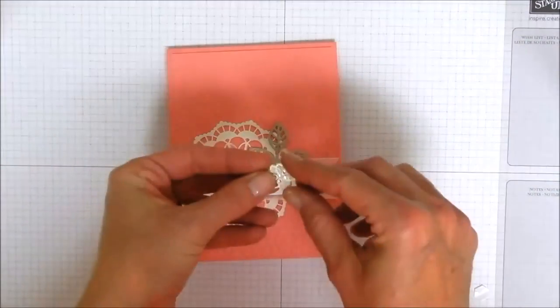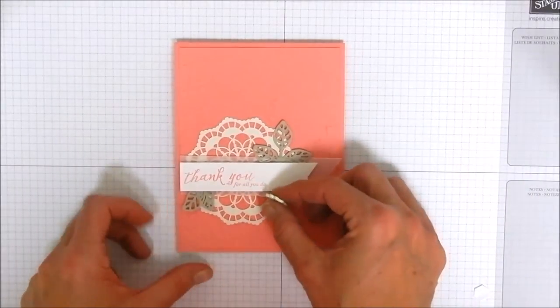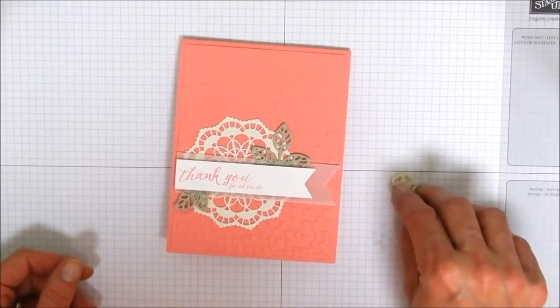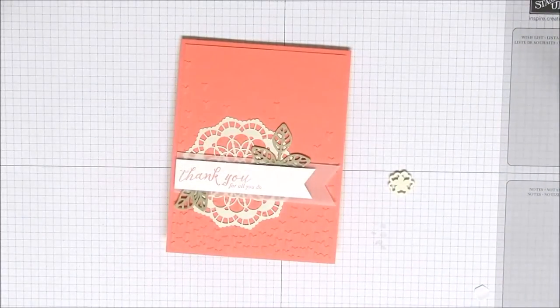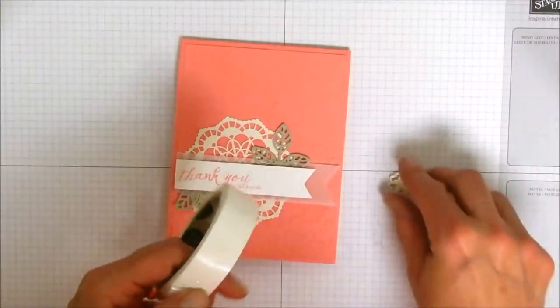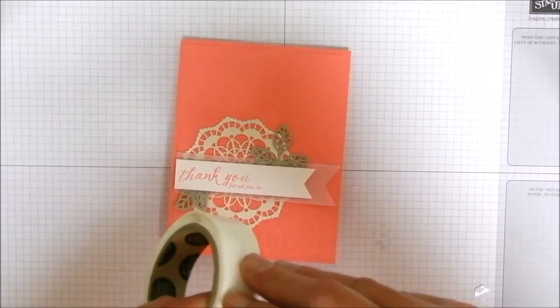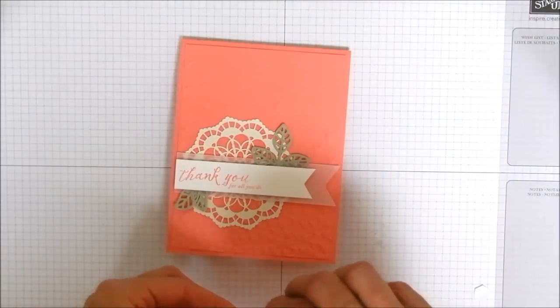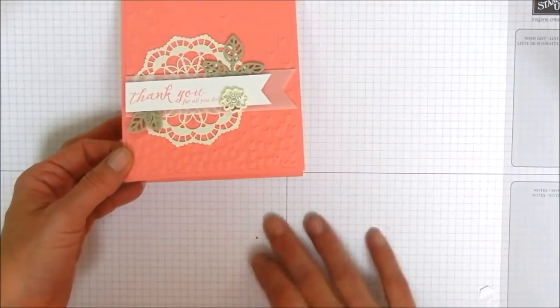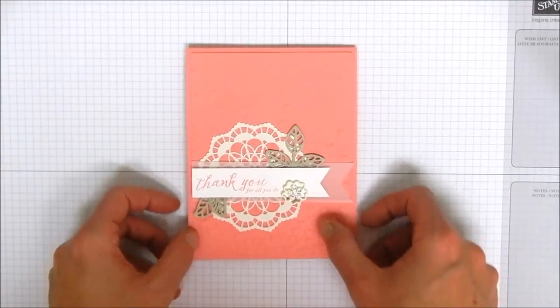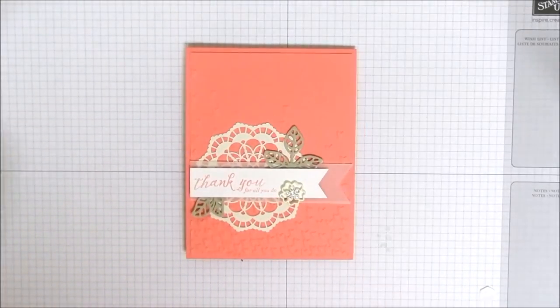And then we're going to take our little flower embellishments and that's going to go here off to the side. Let's get a glue dot and put it on the back of there, maybe a couple of them just to make sure we have a nice secure hold and we're going to put our little flower right here at the end.